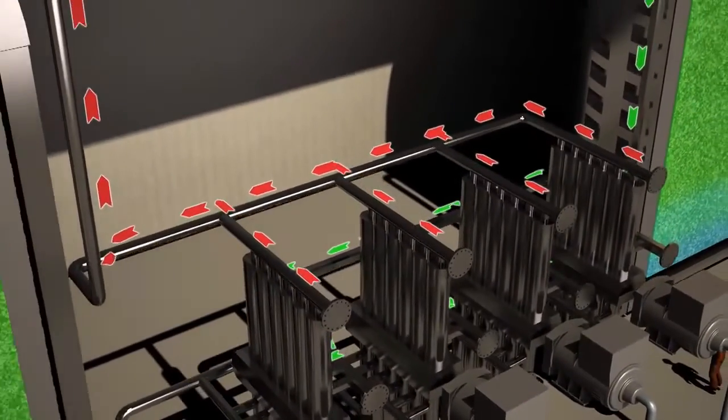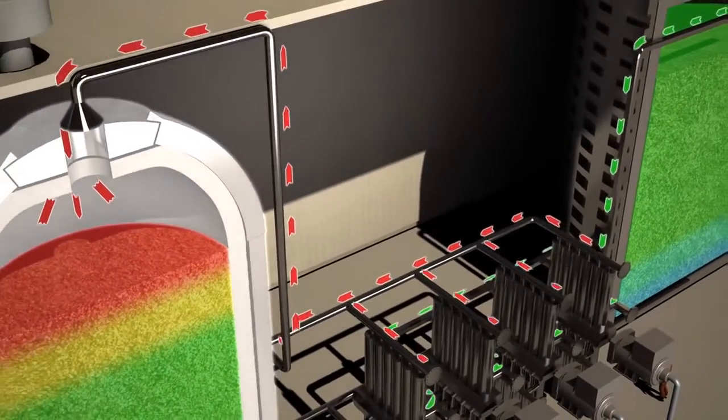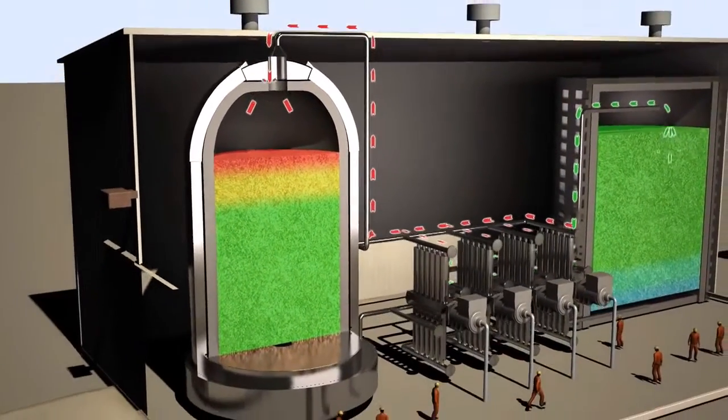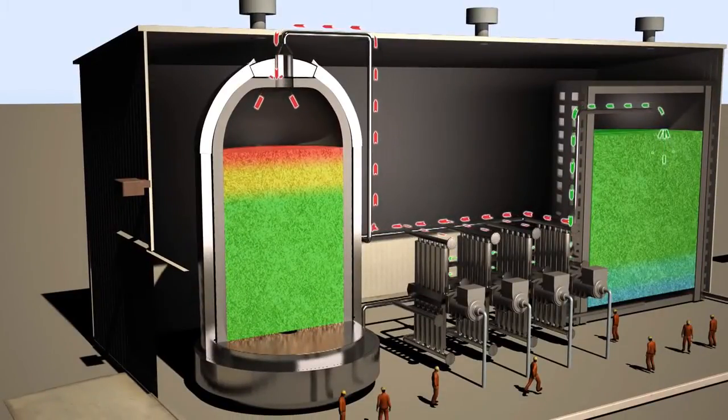The hot compressed gas flows to the top of the hot store. Here it permeates the gravel storage medium, which simultaneously cools the gas and warms the medium.